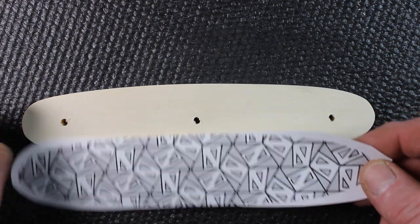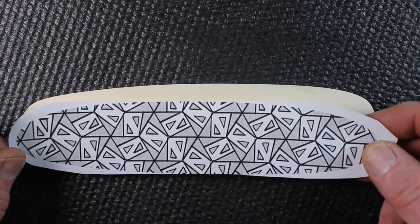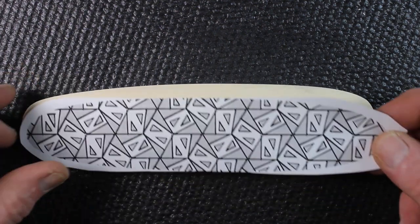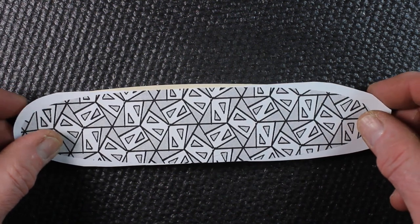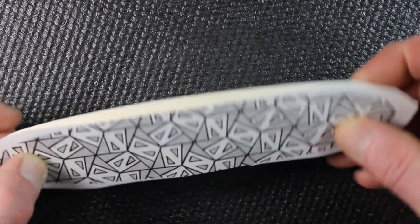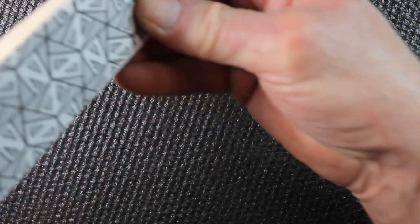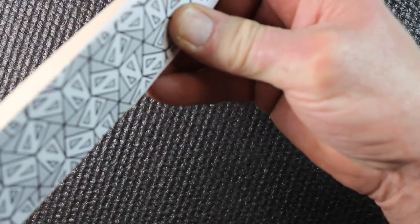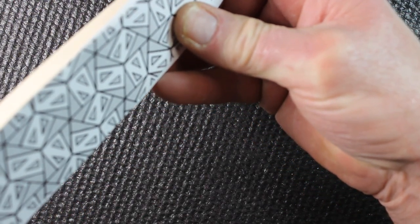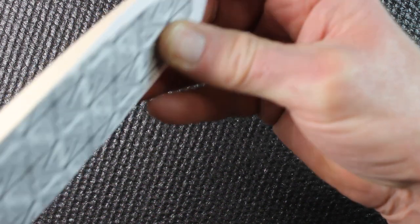I'll be applying this pattern using graphite transfer paper. First step is to line up the pattern in the exact spot that you want it. I'm going to hold this up to the light so I can see that the pattern is right along the edges of the basswood blank.